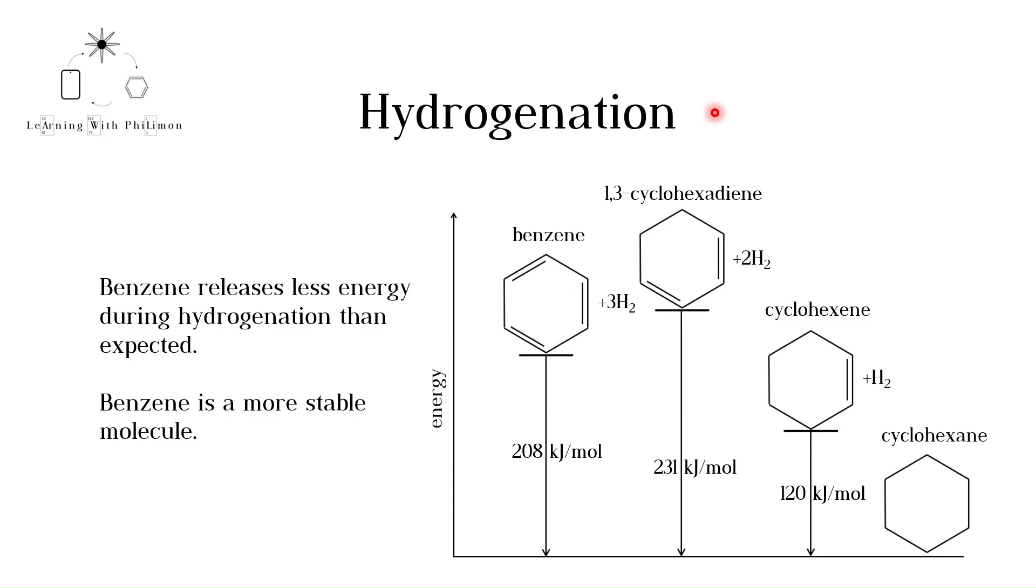The next piece of evidence against Kekulé's structure is hydrogenation. Hydrogenation is the addition of a hydrogen molecule H2 to an unsaturated compound. In the following diagram, we can see that three molecules release a different amount of energy during hydrogenation. Cyclohexene consists of a six-membered ring of carbons and contains one carbon-carbon double bond. When cyclohexene reacts with hydrogen in the presence of a catalyst, the double bond breaks and each carbon involved in the double bond forms a single bond with a hydrogen atom. Cyclohexane is formed and 120 kJ are released per mole.